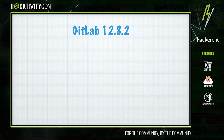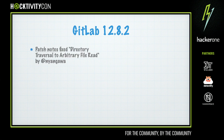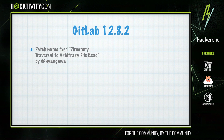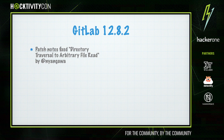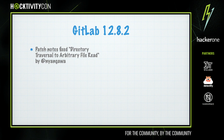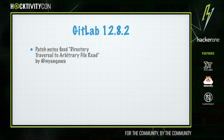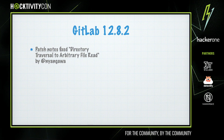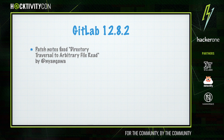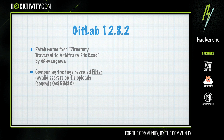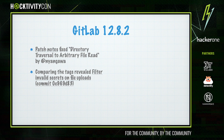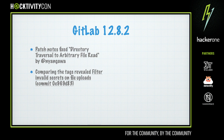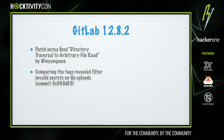Fast forward to March of this year and I was reading through the patch notes of the latest GitLab security release. The first issue was titled 'directory traversal to arbitrary file read,' which sounded like a pretty big deal. GitLab normally discloses the original ticket about 30 days after the fix has been released, but because it's open source it's normally pretty easy to find the commit by comparing the previous release and work out what the issue was.